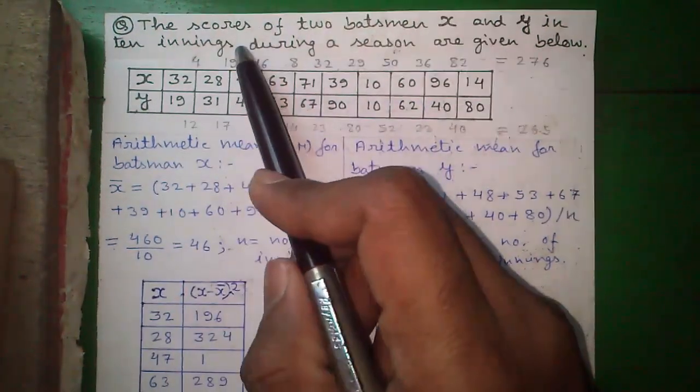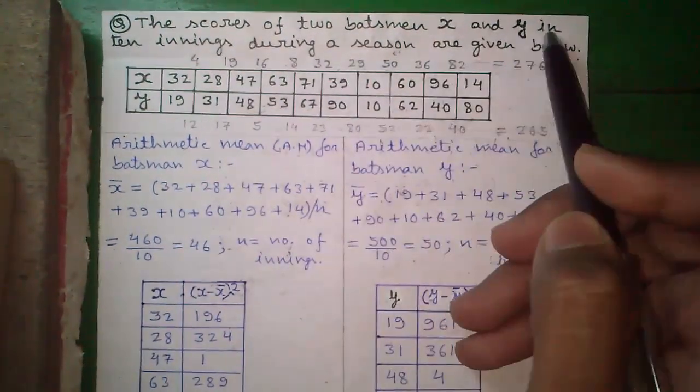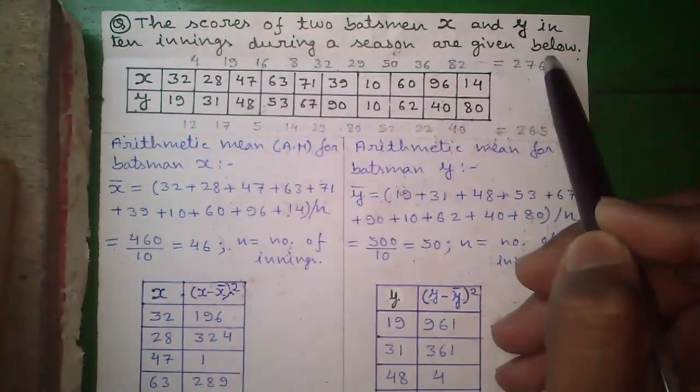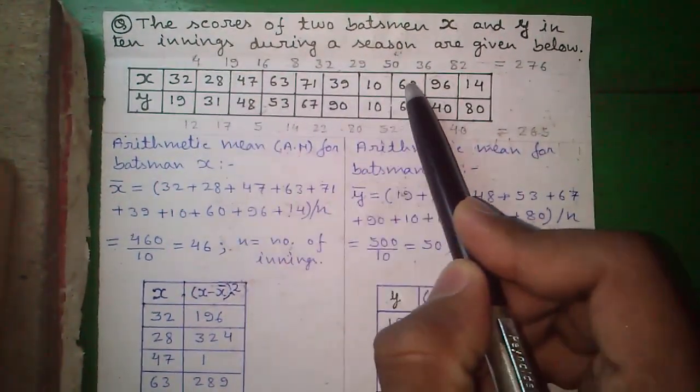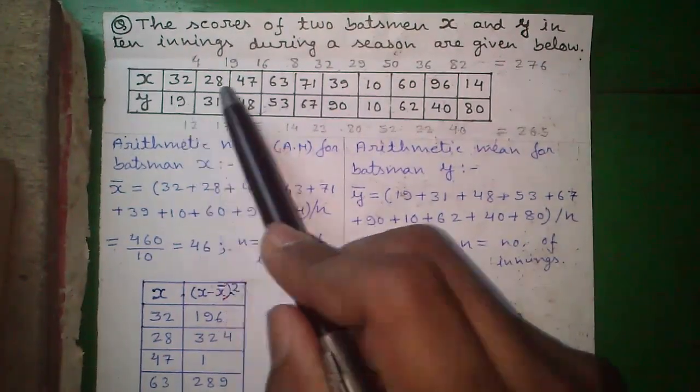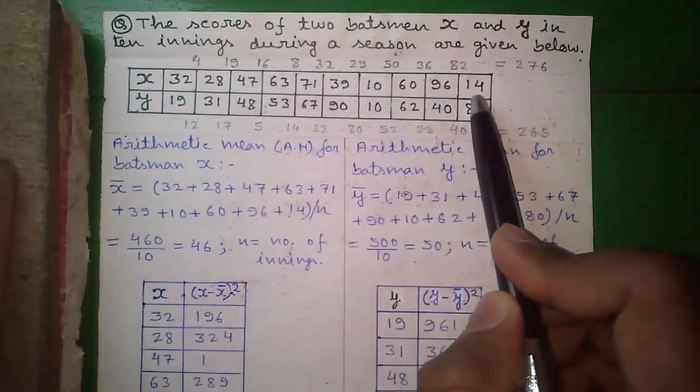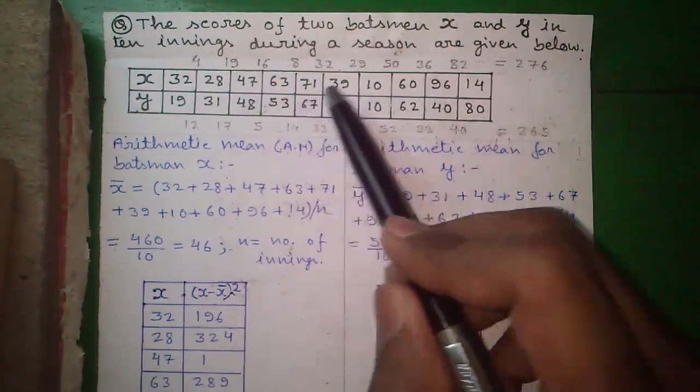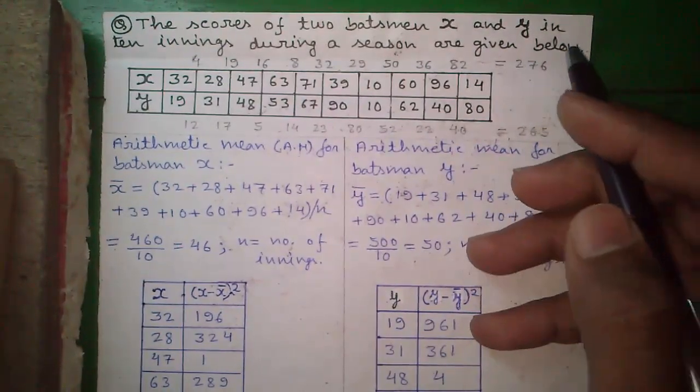Our question is the scores of two batsmen X and Y in 10 innings during a season are given below. These are the scores during 10 innings by batsman X and these are the scores during 10 innings by batsman Y. Our question is find out which batsman was more consistent in scoring.